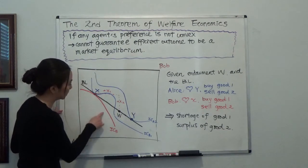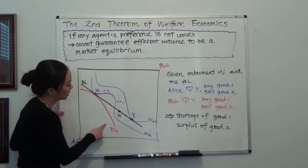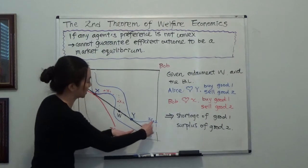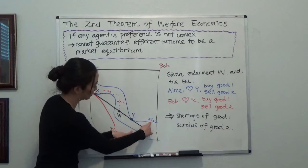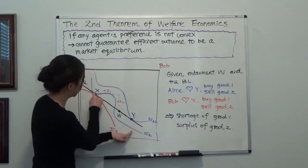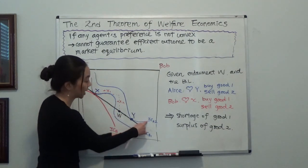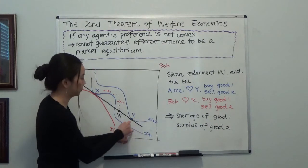point x really is the best for Bob. But for Alice, Alice will say, look, if I move to point y, then my indifference curve is higher than point x indifference curve, meaning I have a higher utility level at point y.